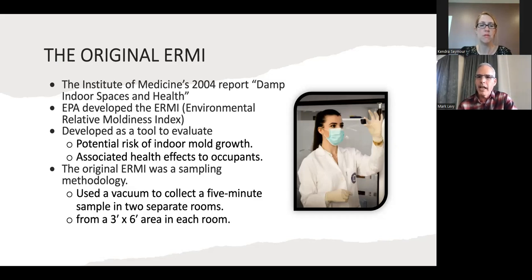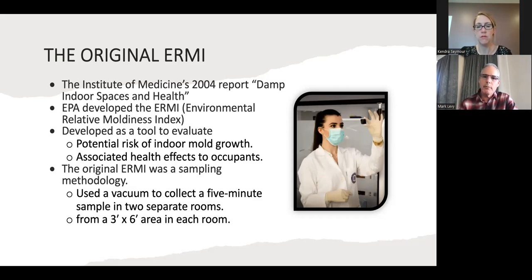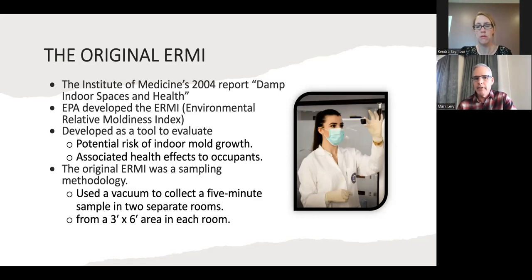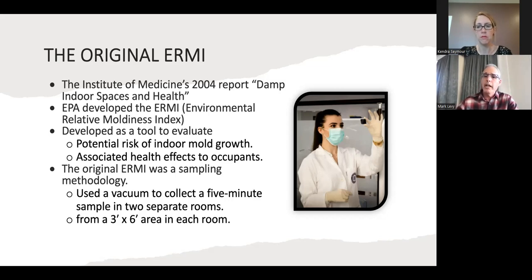The original ERMI was actually a recommendation from the Institute of Medicine's 2000 report, Damp Indoor Spaces. They were looking for a more accurate way to identify certain types of microorganisms with DNA formatting and other types of technology. So the EPA developed ERMI, which is Environmental Relative Moldiness Index. The original ERMI sampling methodology utilized a vacuum with a cassette, collecting dust from two different rooms — a family room or living room, as well as a bedroom — from a three-by-six area of carpet, to give you an ERMI score of that home.